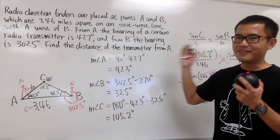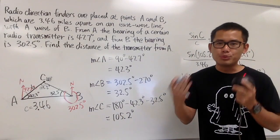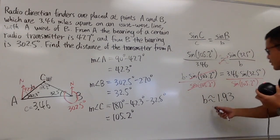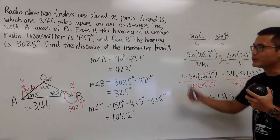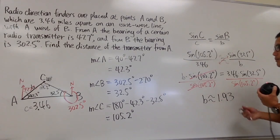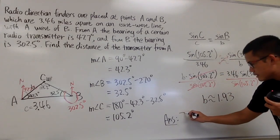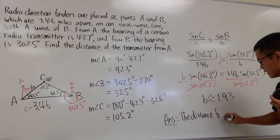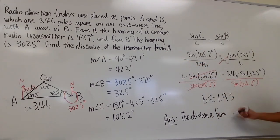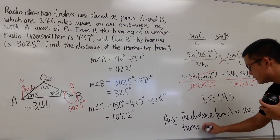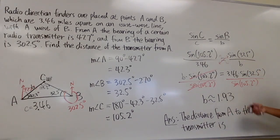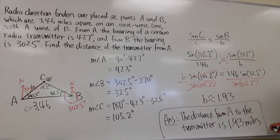Just to present this properly for a situation problem, we write it as a complete sentence: the distance from A to the radio transmitter is about 1.93 miles.